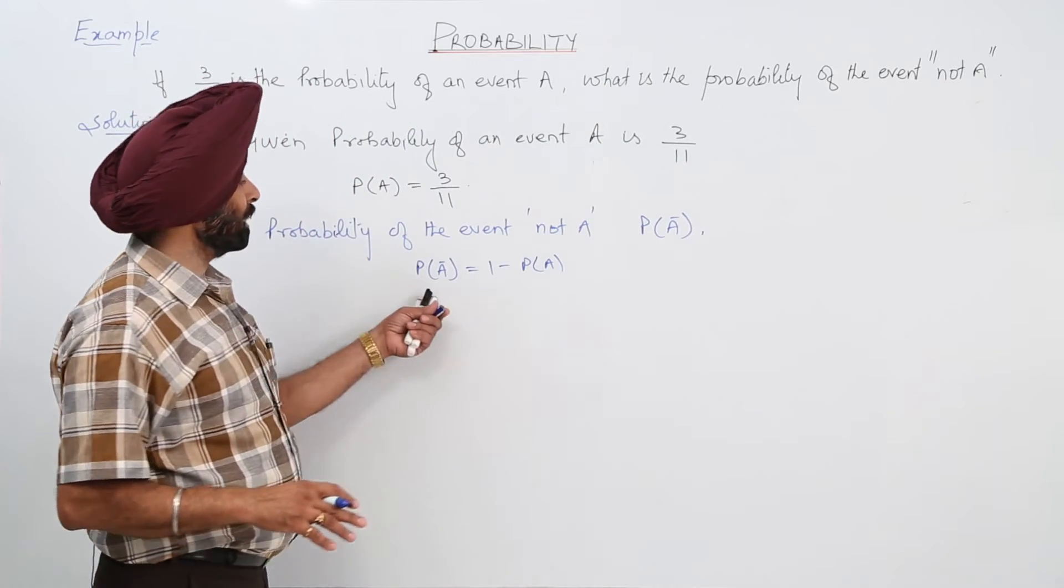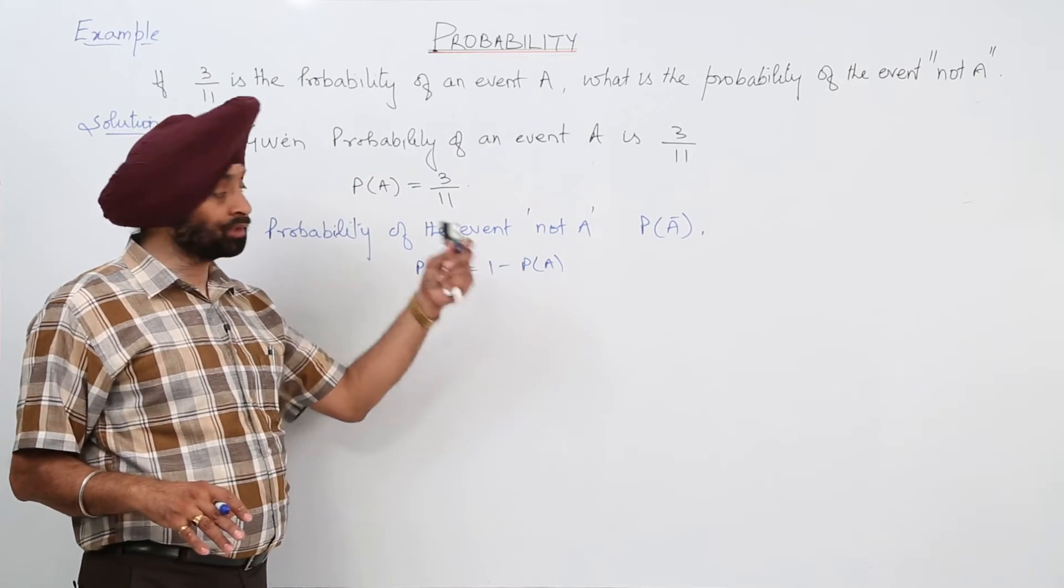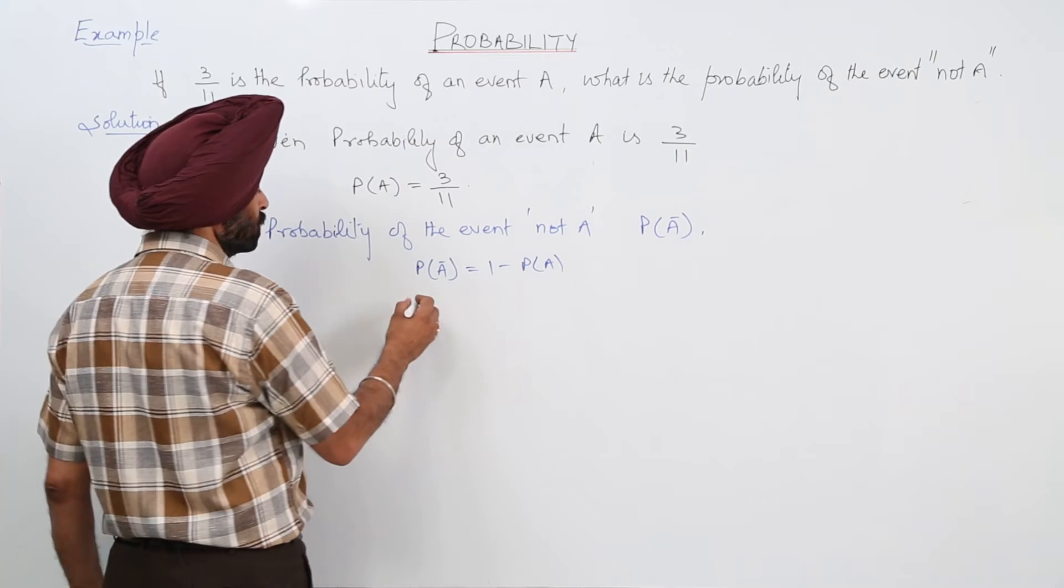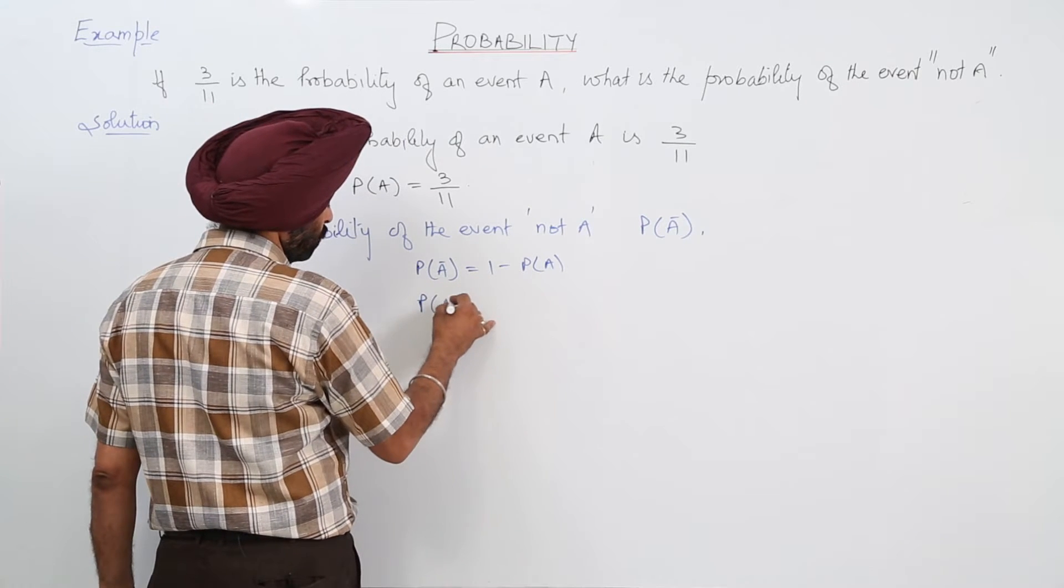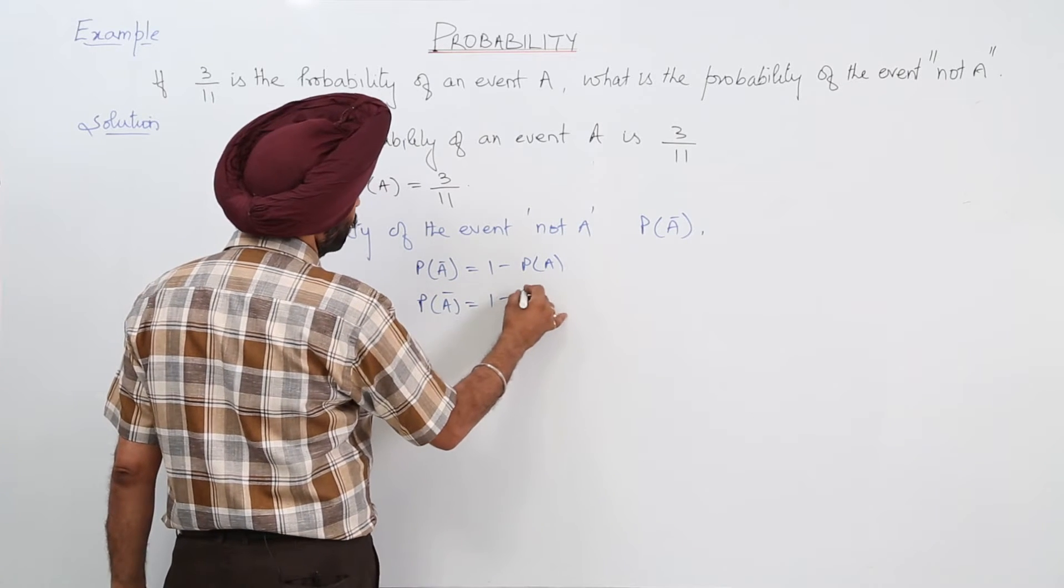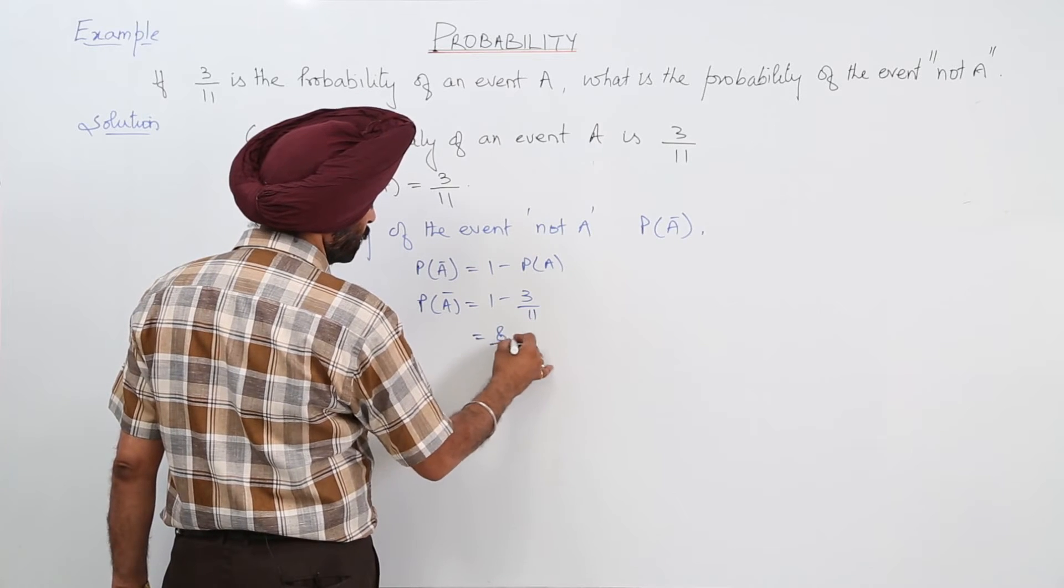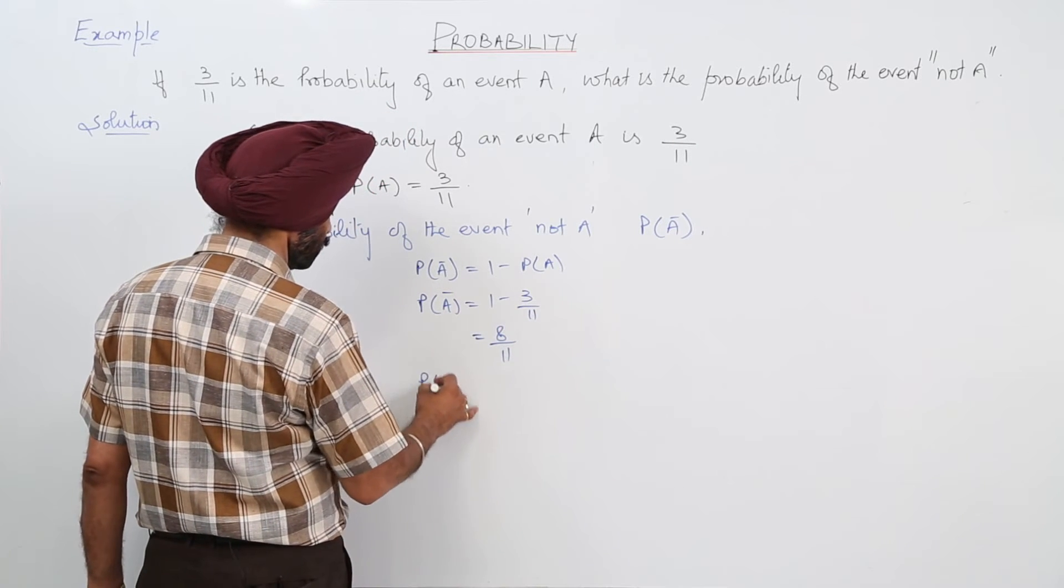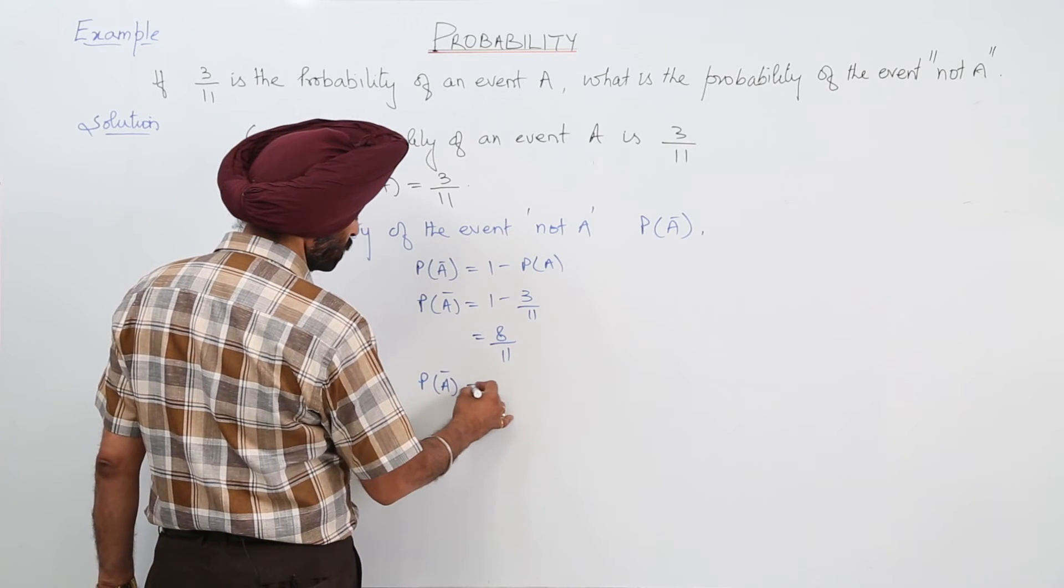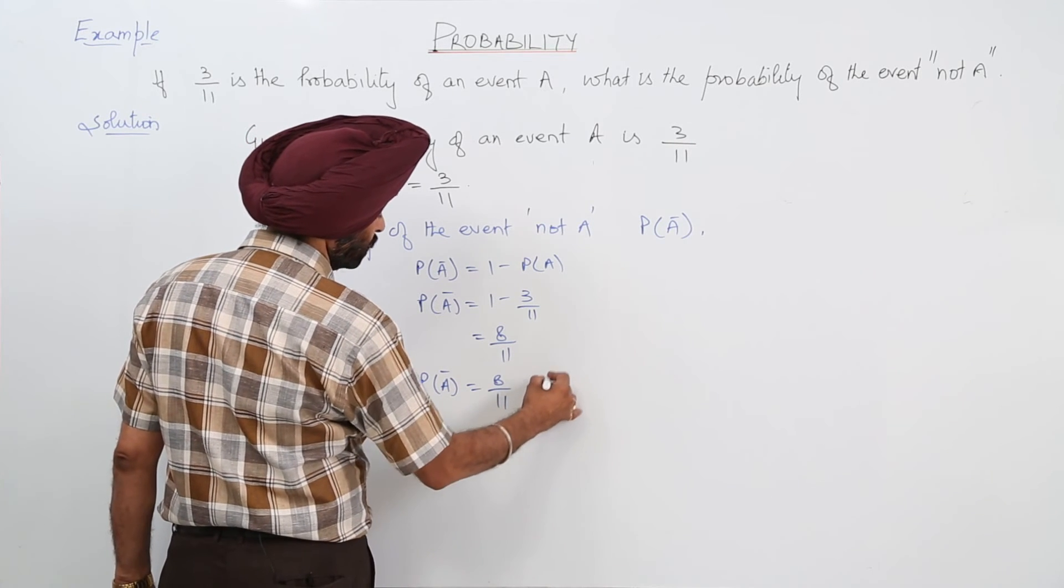So P(not A) is equal to 1 minus P(A). P(not A) equals 1 minus 3 upon 11, which equals 8 upon 11. Therefore, P(not A) equals 8 upon 11, answer.